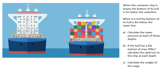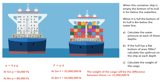Here's a tricky question involving a container ship. When the ship is empty, the bottom of its hull is 5 metres below the waterline; when full, it is 8 metres below. First, calculate the water pressure at each depth using P = hρg. At 5 metres: P = 5 × 1000 × 10 = 50,000 pascals. At 8 metres: P = 8 × 1000 × 10 = 80,000 pascals.